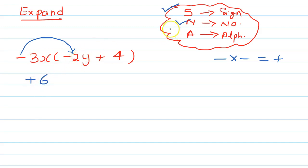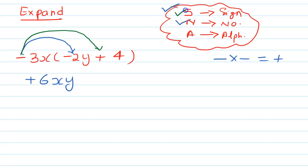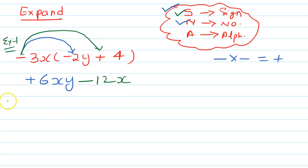Then multiply the numbers: 3 times 2 is 6. Then multiply the alphabets: x times y is xy. So the first product is plus 6xy. Now multiply minus 3x by plus 4: sign — minus times plus becomes minus; number — 3 times 4 is 12; alphabet — x times nothing is x. So we get 6xy minus 12x.